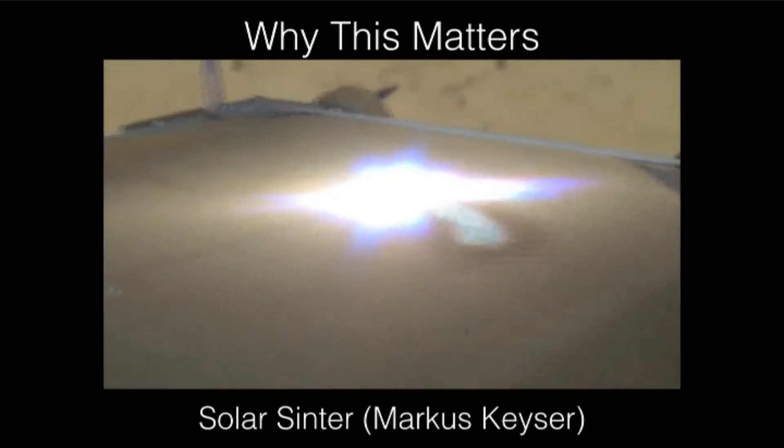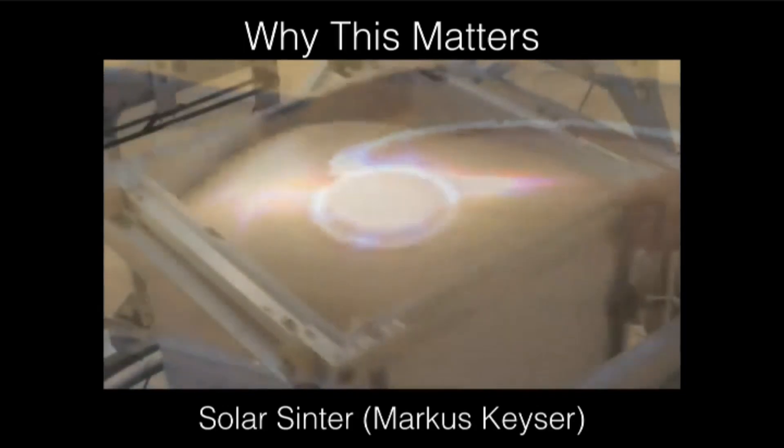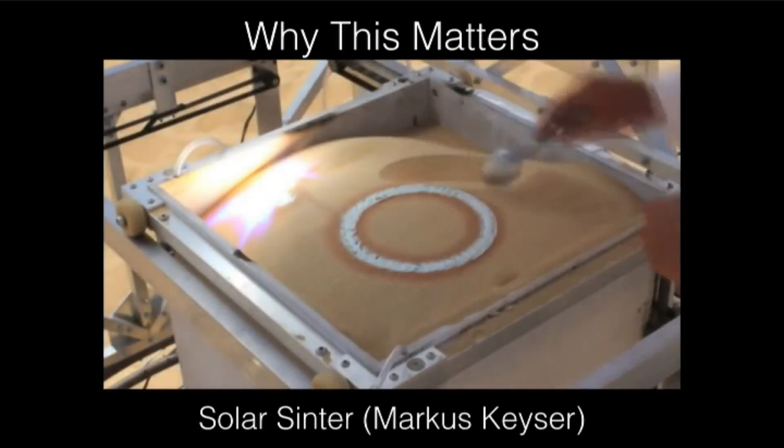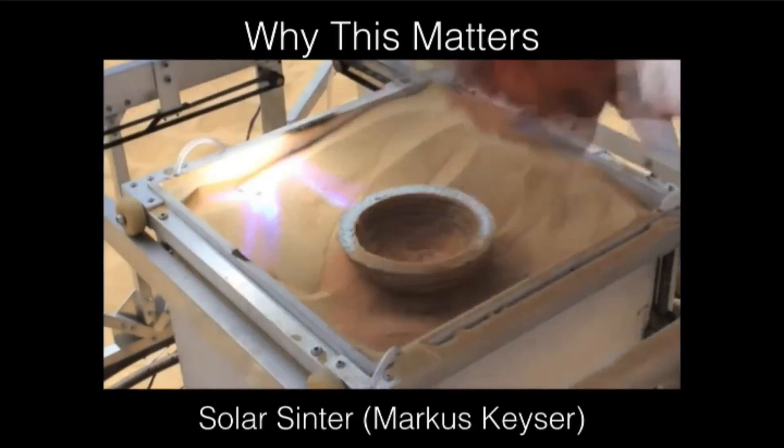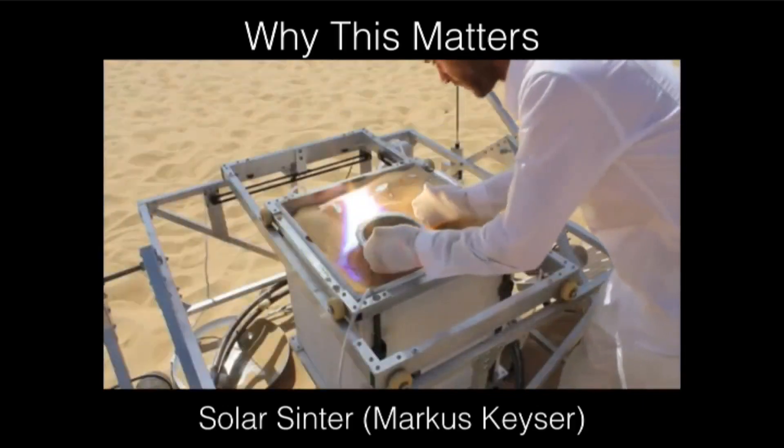So he takes sand from the desert that he's in, he puts it in a container, and he's got a 3D printer that he's made. It's entirely solar powered. There is no fossil fuels, but he can take sand and turn it into something structural.